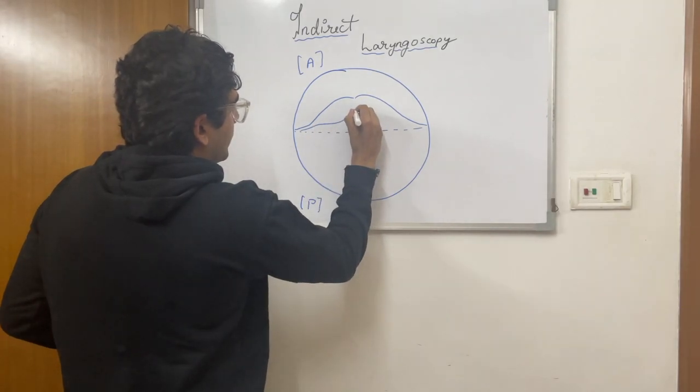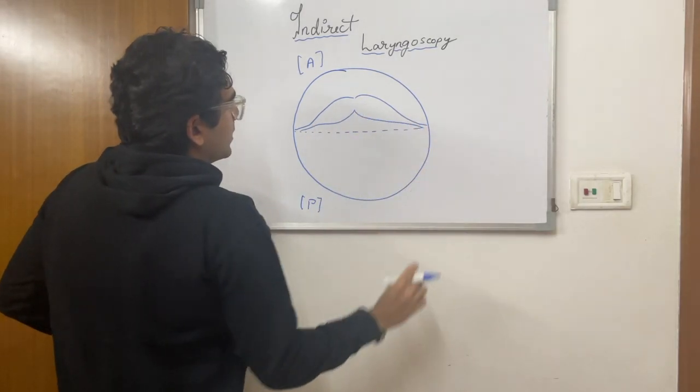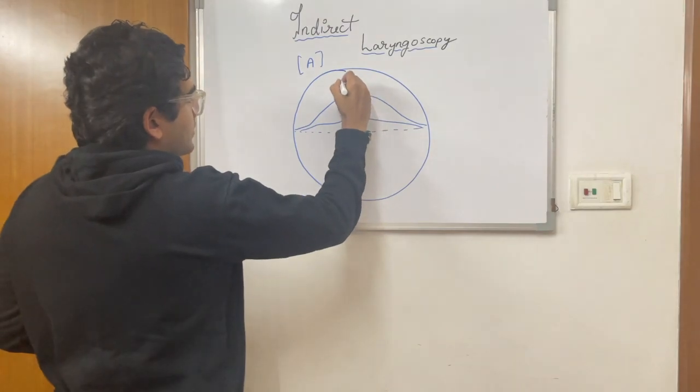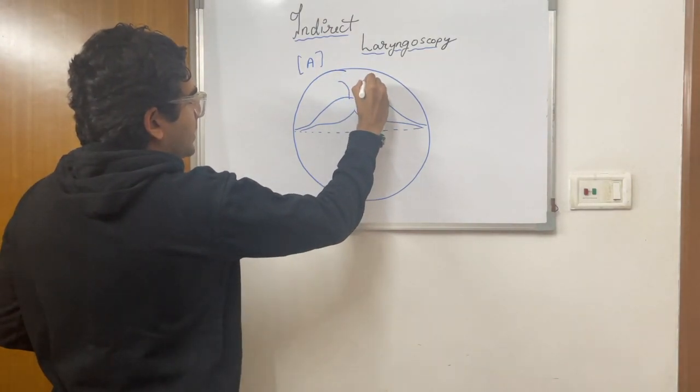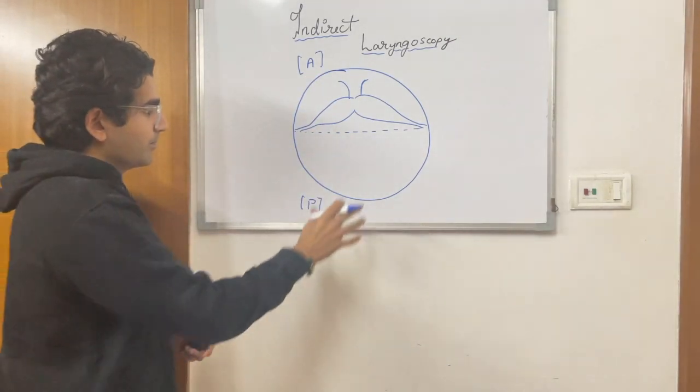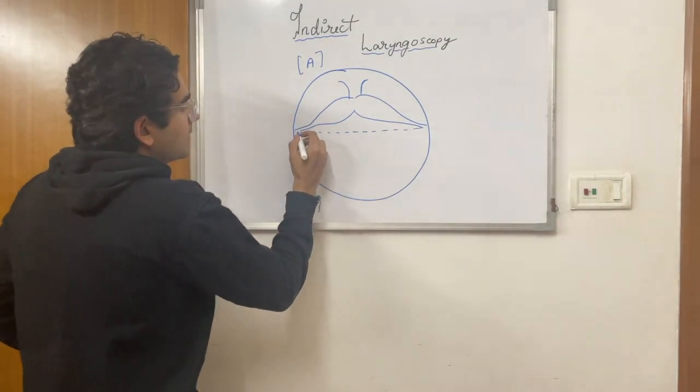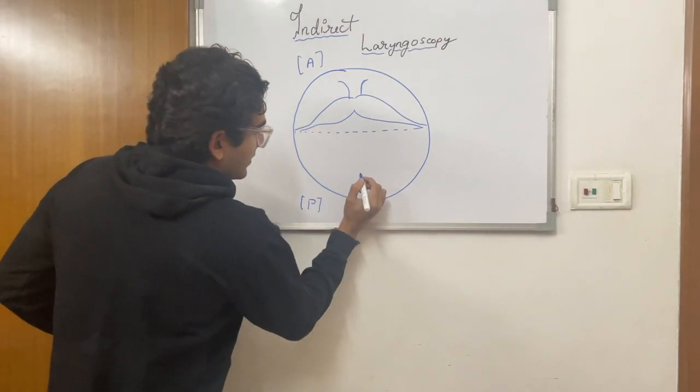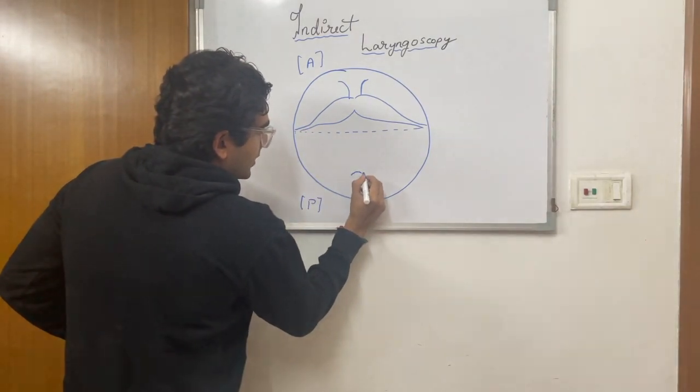So these are your epiglottic folds. There will be glosso-epiglottic or median glosso-epiglottic folds in the midline. Posteriorly, you will be able to see from the central aspect the post-cricoid region.